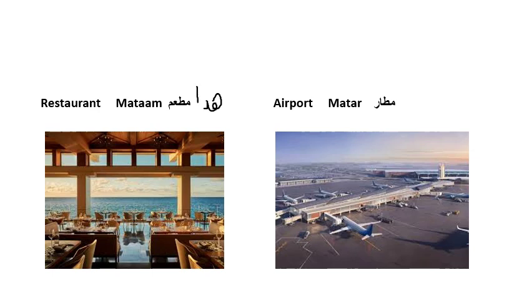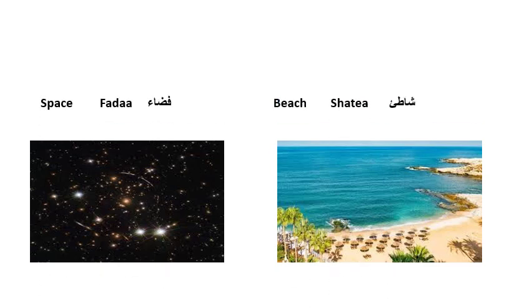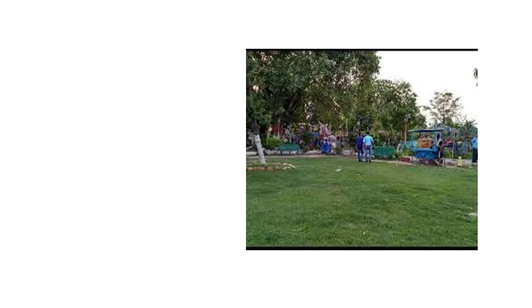We have a restaurant — 'مطعم' — and we say 'هذا المطعم' because 'مطعم' is masculine. Another example of places in Arabic: we have the beach — 'شاطئ' — which is masculine, so we say 'هذا الشاطئ'. We also have a shop — 'دكان' or 'محل' — which is masculine. And here we have a park.